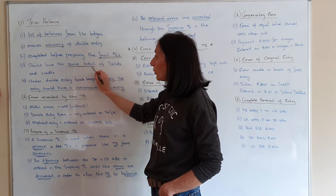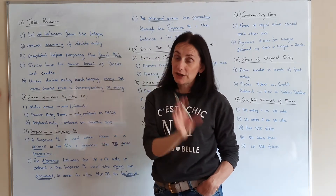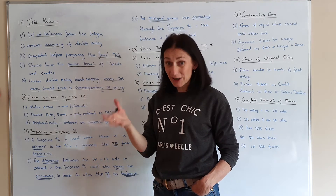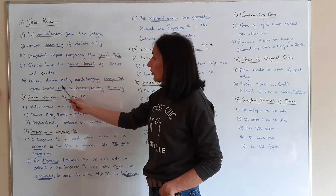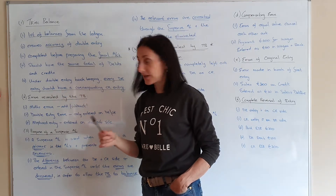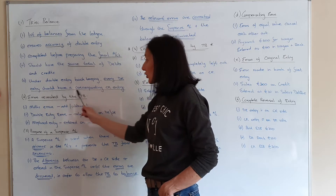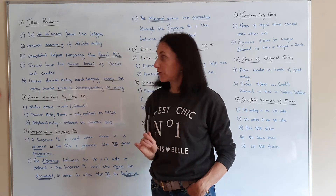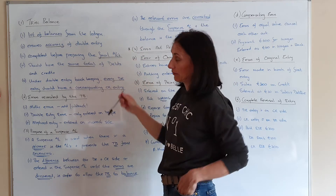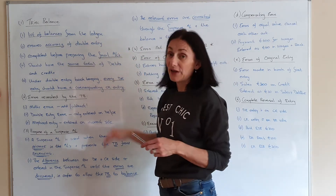You should have the same total of debits and credits — the total on your debit side should equal the total on your credit side. Under double entry bookkeeping, every debit entry should have a corresponding credit entry. To get your marks about why a trial balance is important, you actually need five statements.